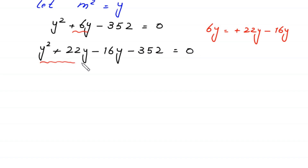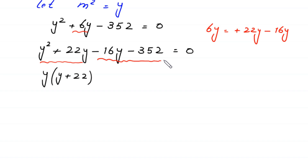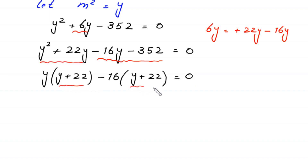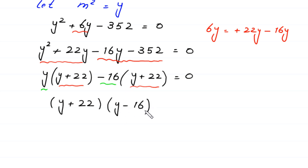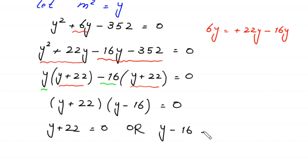So the equation is y² + 22y − 16y − 352 = 0. From the first two terms we factor out y: y(y + 22), and from the last two terms we factor out −16: −16(y + 22) = 0. Since (y + 22) is a common factor, we get (y + 22)(y − 16) = 0. Therefore either y + 22 = 0 or y − 16 = 0.